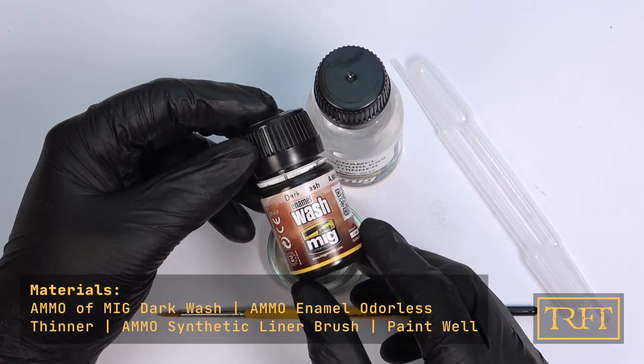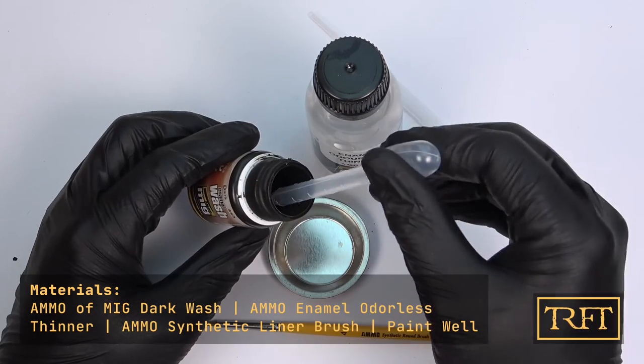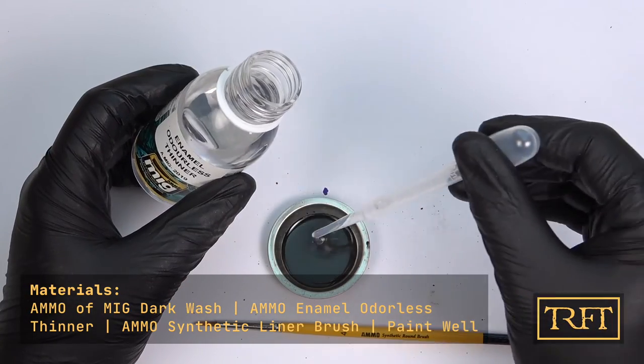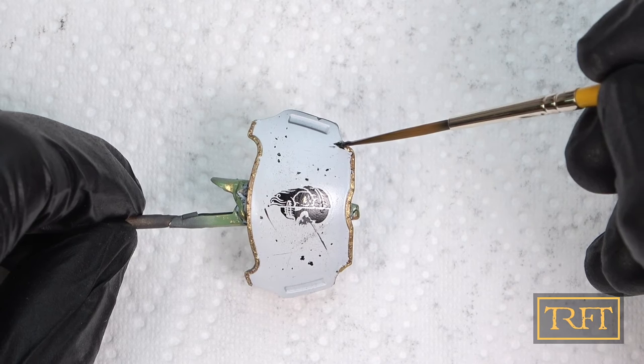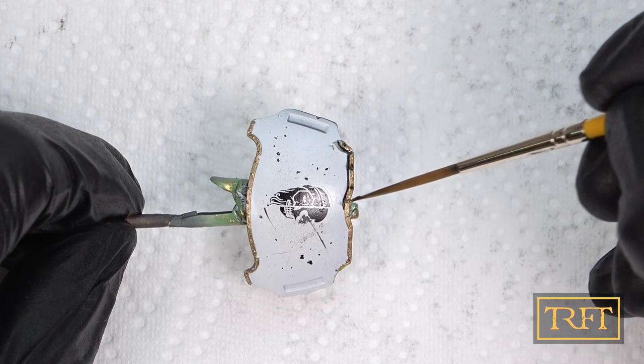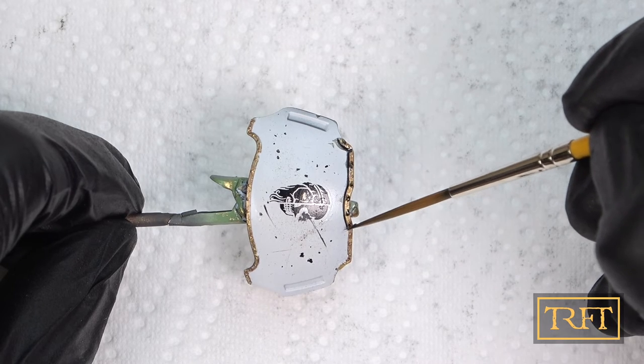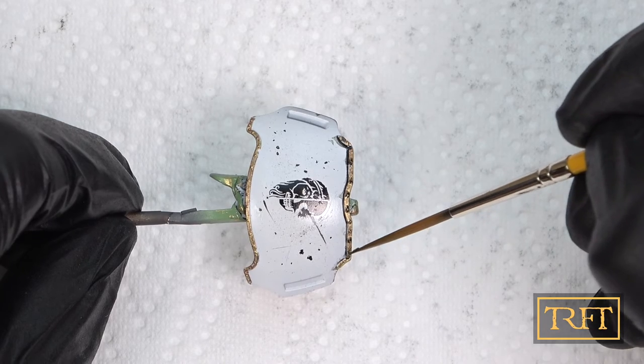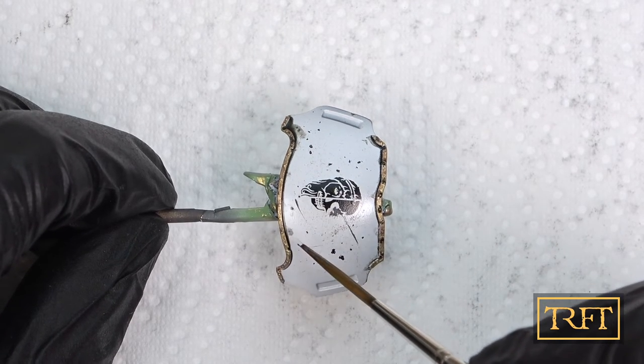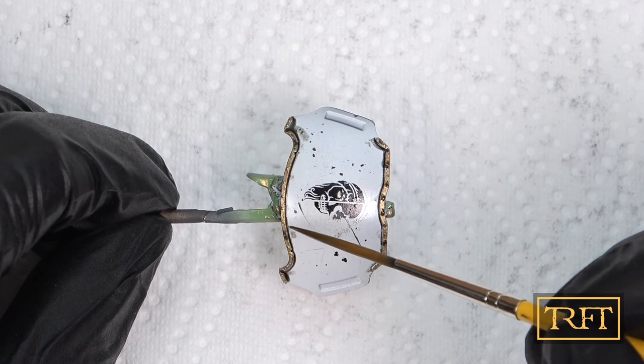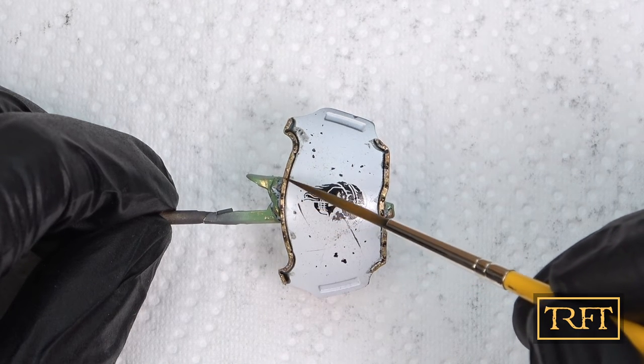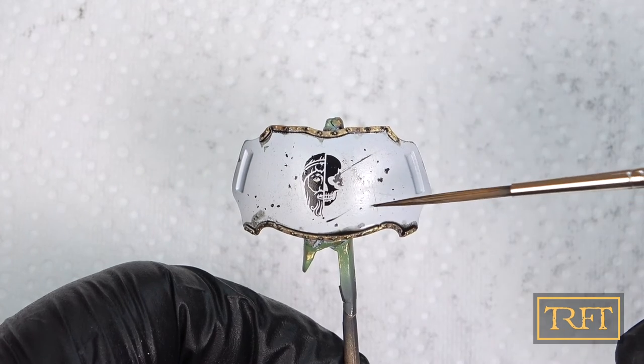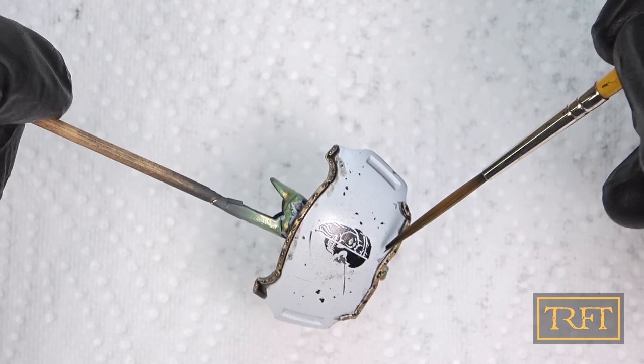Next in our weathering process is the all-important pin wash. For this I use my trusty Ammo Dark Wash, which is an enamel mixed with some odorless thinner, roughly 2 parts wash to 1 part thinner. The idea of course is to use capillary action as much as possible, allowing the wash to flow by itself rather than painting with it, so to speak. As you can see I was struggling to hit those rivets, even with magnifying lenses that I was actually wearing. Again, if you would like a dedicated tutorial for just the pin wash technique, I would be happy to oblige.